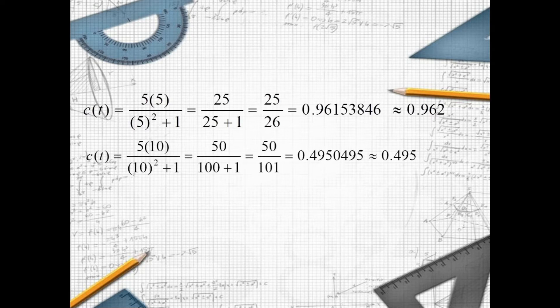At t equals 10, c of t equals 5 times 10 over 10 squared plus 1, which is 50 over 101. Dividing 50 by 101 gives 0.4950495. Rounded to three decimal places, the answer is approximately 0.495.